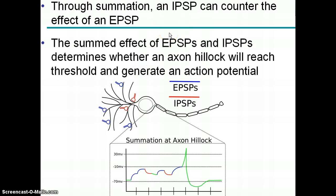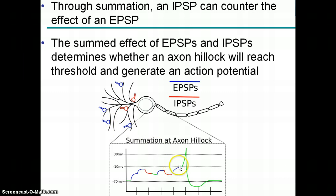How do you figure out whether or not an action potential is going to be created? You basically sum the excitatory and inhibitory post-synaptic potentials. Some signals are going to be inhibitory and some excitatory, and based on timing and how many different signals are coming in from different areas, you can cause enough sodium channels to open to lead to depolarization.